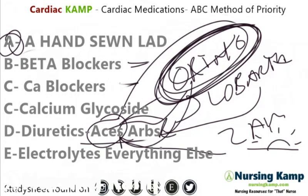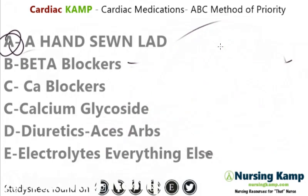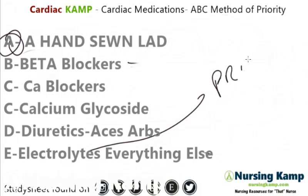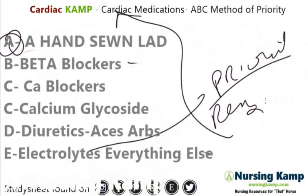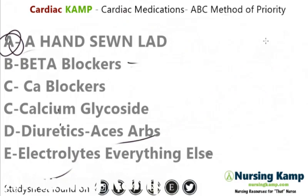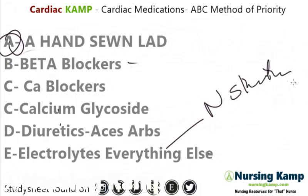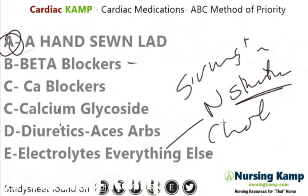Electrolytes like potassium, magnesium, and calcium — and all those medications — have their own priority action; however, it's replacement. They do affect cardiac, but in terms of priority action, it's not really a priority — it's independent of itself. And then the last thing is everything else, which would be like your Pravachol, your statins like Simvastatin, and your cholesterol medications. That's generally not acute.